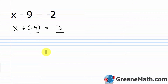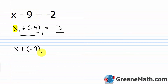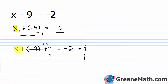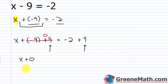Our goal when solving an equation is to isolate the variable — in this case, x. On the left side I have x plus negative 9, and I need to get rid of that to get x by itself. If I add negative 9 and positive 9, I get 0, and x plus 0 simplifies to just x. So I add the opposite of negative 9, which is positive 9, to both sides. On the left, negative 9 plus 9 is 0, leaving just x. On the right, negative 2 plus 9 is 7.